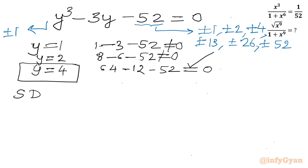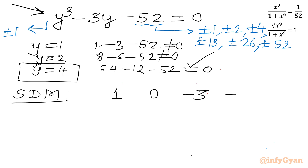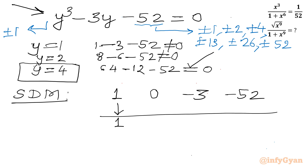Now using synthetic division with coefficients of the cubic: 1, 0, −3, −52. Bring down 1; 1 times 4 is 4; 0 plus 4 is 4; 4 times 4 is 16; 16 minus 3 is 13; 4 times 13 is 52, giving remainder 0. So the coefficients for the remaining quadratic are 1, 4, 13.